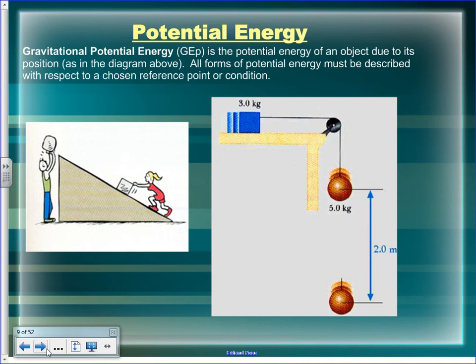Gravitational potential energy is the potential energy of an object due to its position. All forms of potential energy must be described with respect to a chosen reference point, which is usually the ground. The formula is EP = m × g × h.